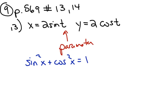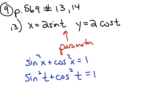We can change those x's to t's, because it doesn't matter what we call the variable — x, t, theta, or any other letter. The way this works: I need to solve for sine t, which gives sine t equals x over 2. I plug x/2 in for sine t and square it. Then I solve for cosine t, which gives cosine t equals y over 2.